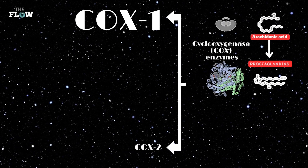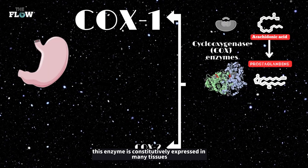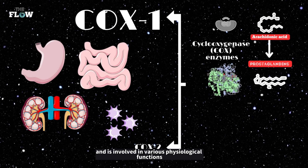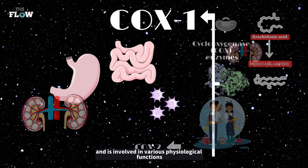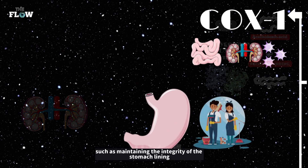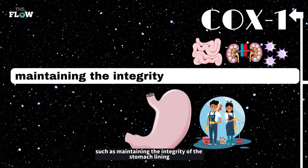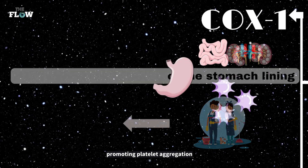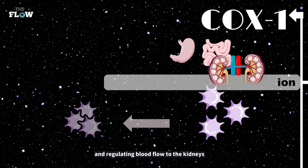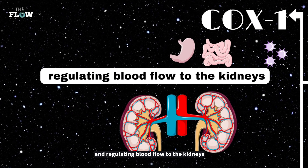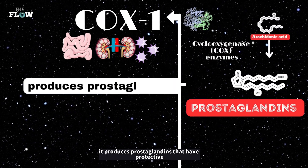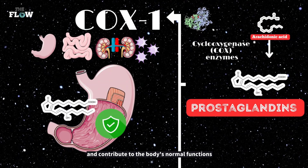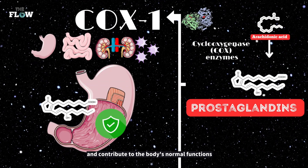COX-1: this enzyme is constitutively expressed in many tissues and is involved in various physiological functions, such as maintaining the integrity of the stomach lining, promoting platelet aggregation, and regulating blood flow to the kidneys. It produces prostaglandins that have protective effects on the stomach lining and contribute to the body's normal functions.